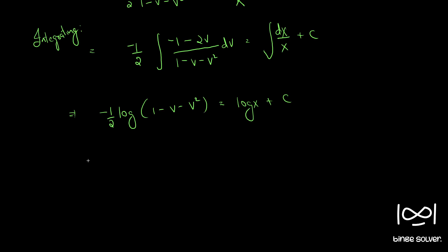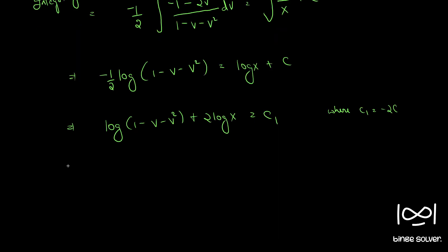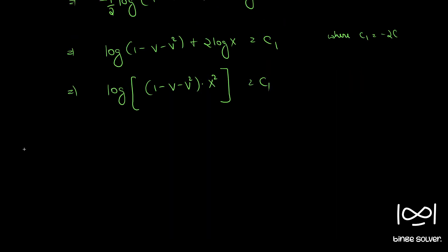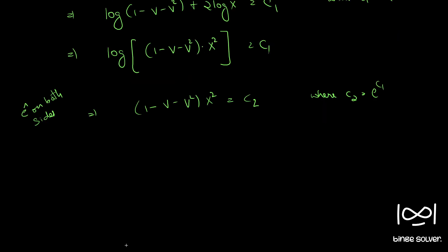Multiplying throughout by minus 2 and applying logarithm properties: log(1 minus v minus v squared) plus 2 log x equals c1, where c1 equals minus 2c. This gives log[(1 minus v minus v squared) times x squared] equals c1. Raising both sides as a power of e: (1 minus v minus v squared) times x squared equals c2, where c2 equals e raised to c1.